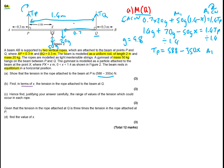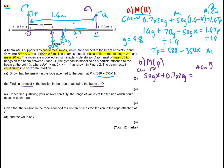Now part b: in terms of x, find the tension in the rope attached to the beam at Q. It makes sense to take moments around P because it makes the working more straightforward. Taking moments about P — in the clockwise direction we have the gymnast at distance x, so 50gx, plus 0.7 times 20g for the centre of mass. That equals Tq times 1.4, which is the anti-clockwise moment.